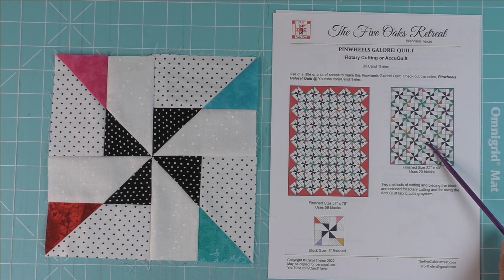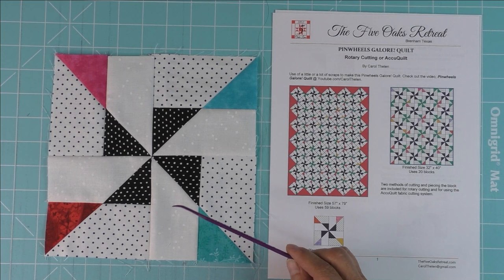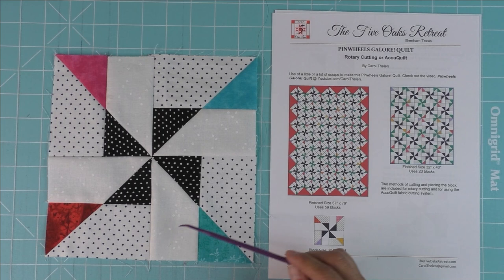This is a smaller quilt that finishes at 32 by 40 and has 20 blocks in it. I think it would look really good really scrappy, but I didn't have a lot of low volume or light kind of scraps.